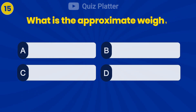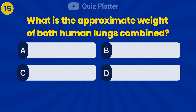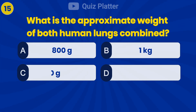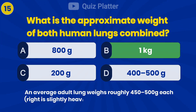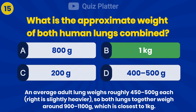What is the approximate weight of both human lungs combined? Answer B: 1 kilogram.